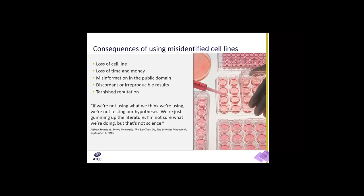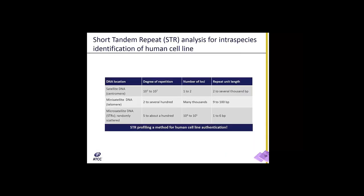Jeffrey Boatwright from Emory University stated in an article in the Scientist Magazine on the Big Cleanup: 'If we're not using what we think we're using, we're not testing our hypothesis. We're just gumming up the literature. I'm not sure what we're doing, but that's not science.' So we highly recommend that you routinely test your cell lines with short tandem repeat DNA analysis, or STR DNA analysis, for intraspecies identification.